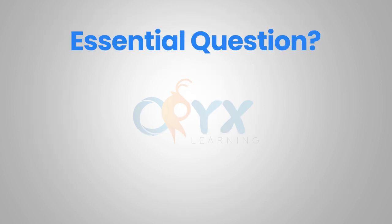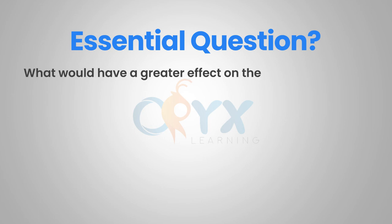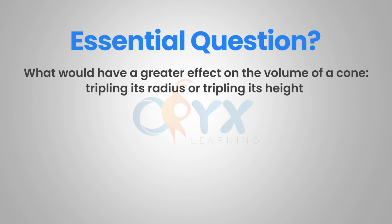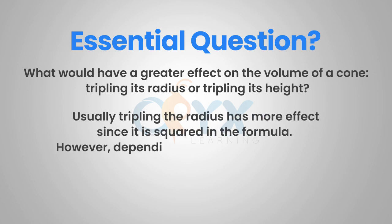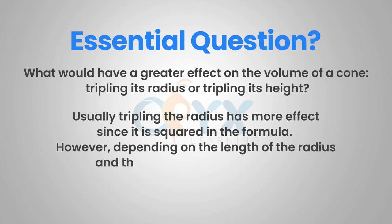Now back to our essential question: what would have a greater effect on the volume of a cone, tripling its radius or tripling its height? Usually tripling the radius has more effect since it's squared in the formula. However, depending on the length of the radius and the height, that could change.